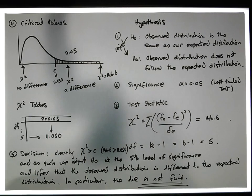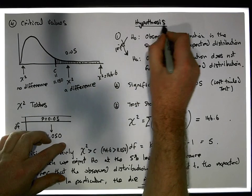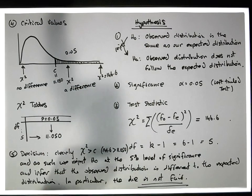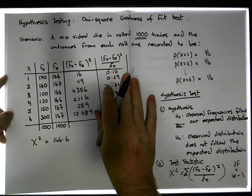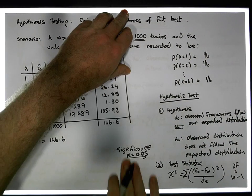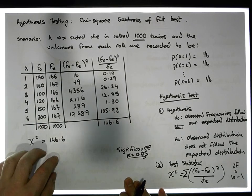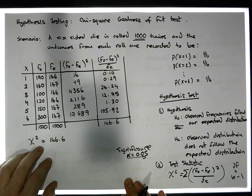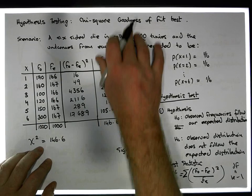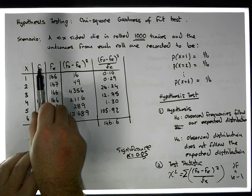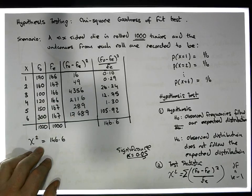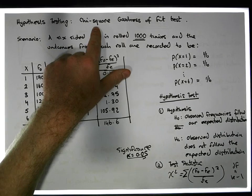So this hypothesis test that we're undertaking is what's known as a chi-squared goodness of fit test. We can actually extend this and ask: is there evidence to suggest that my observed distribution matches any other type of distribution?